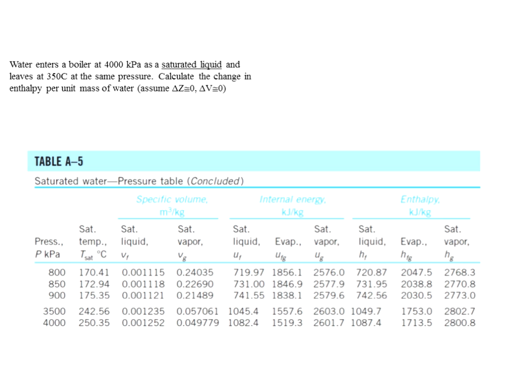This example says water enters a boiler at 4,000 kilopascals as a saturated liquid. This part is very important — it's telling me it's saturated, and specifically a saturated liquid. Remember, it can be saturated liquid, saturated gas, or saturated mixture. In this case, it's telling me it's a saturated liquid. And it leaves at 350 degrees Celsius at the same pressure. Calculate the change in enthalpy per unit mass of water, assuming no change in elevation or potential energy, and no change in velocity or kinetic energy. So what you have is a boiler at 4,000 kilopascals, and it doesn't tell me the temperature.